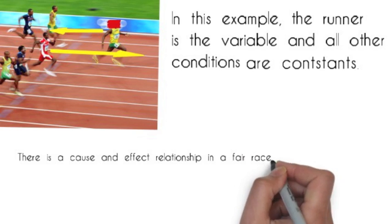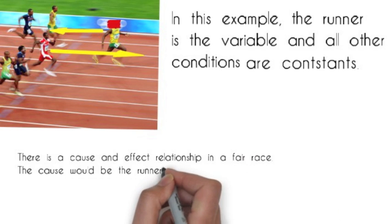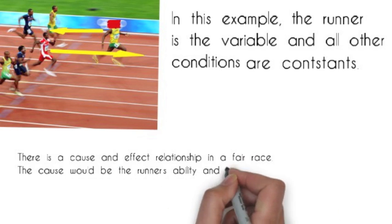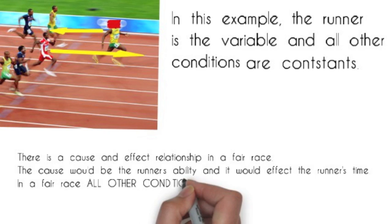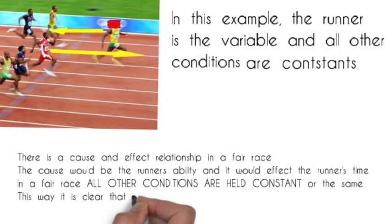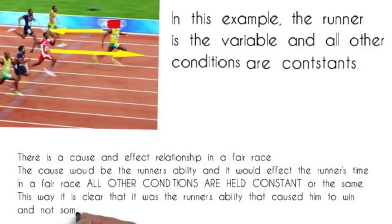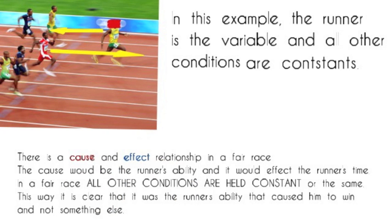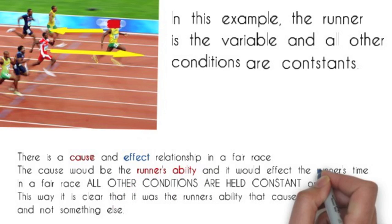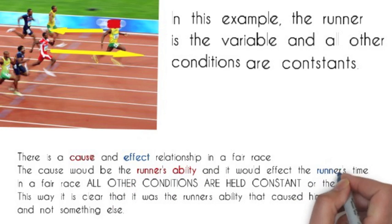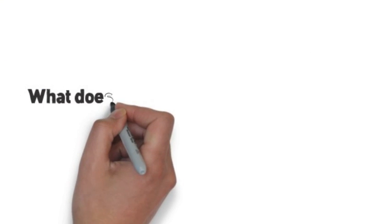There is a cause and effect relationship in a fair race. The cause would be the runner's ability, and it would affect the runner's time. In a fair race, all other conditions are held constant, or the same. This way, it is clear it was the runner's ability that caused him to win, and not something else. The cause is the runner's ability, and the effect is the runner's time.